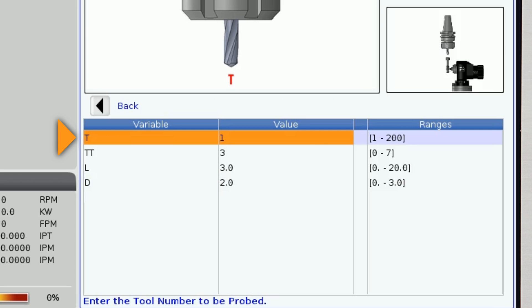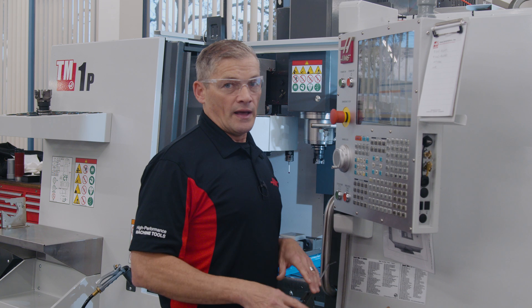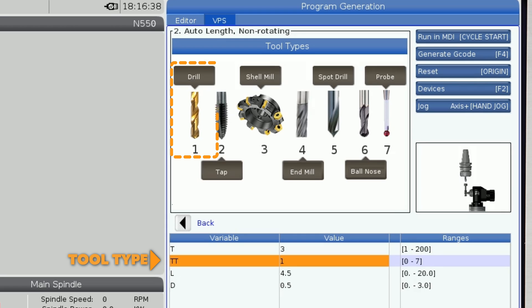Here we'll enter the tool number we want to probe. And it doesn't need to be the tool that's in the spindle. I'll enter tool number three for the drill I want to check. Then I'll set the tool type.